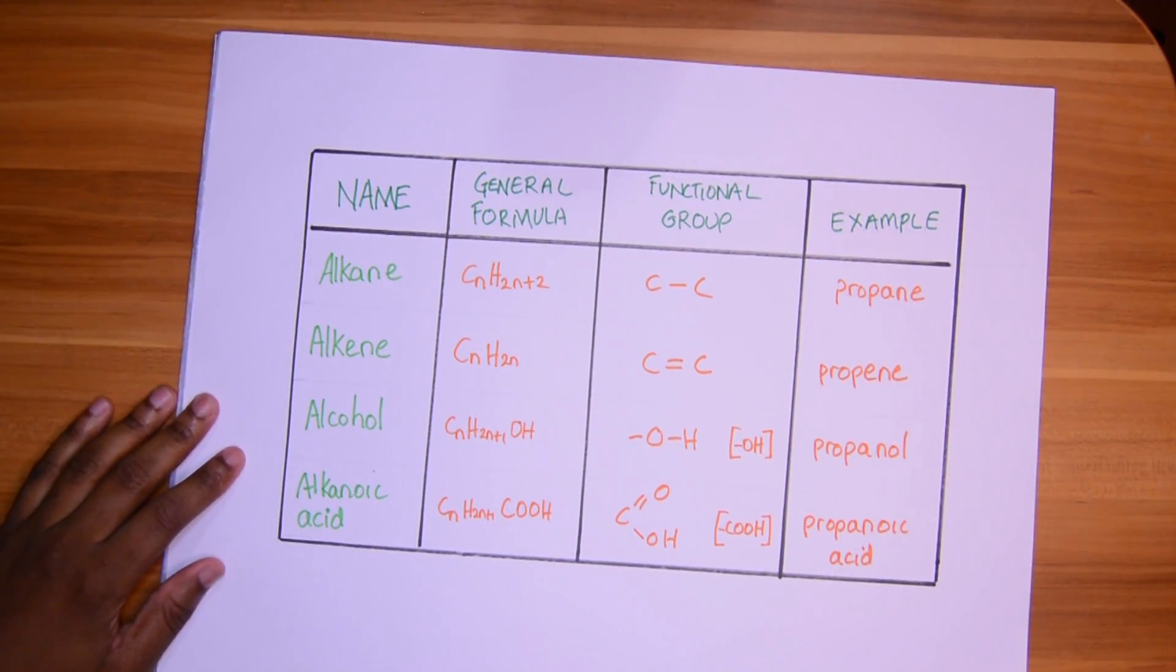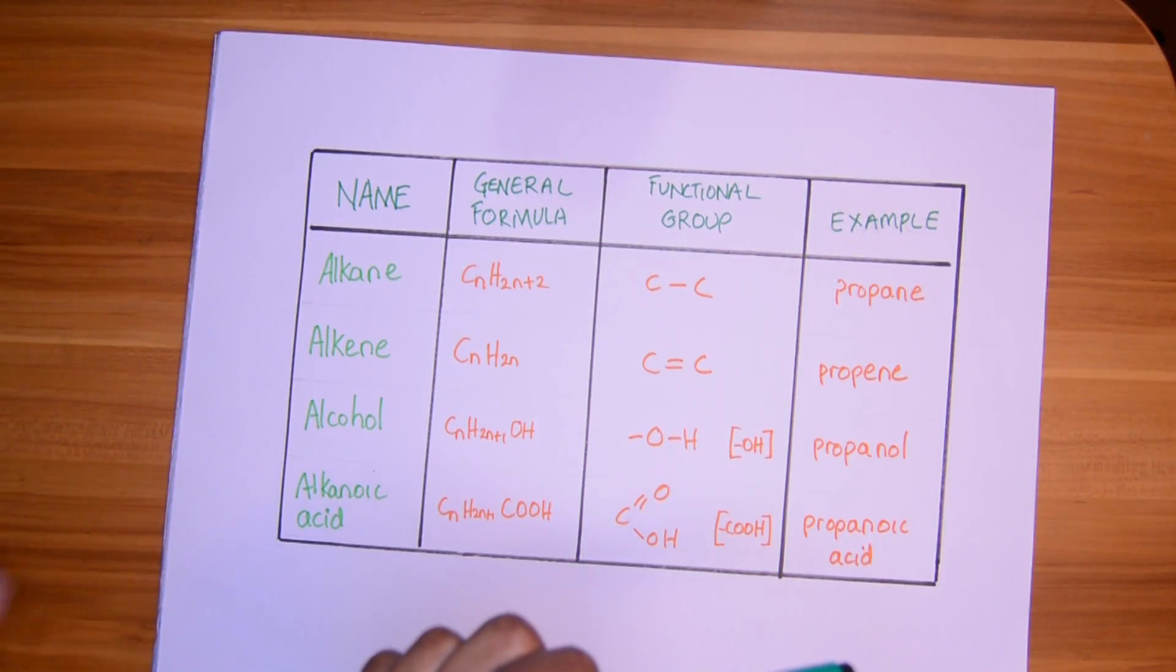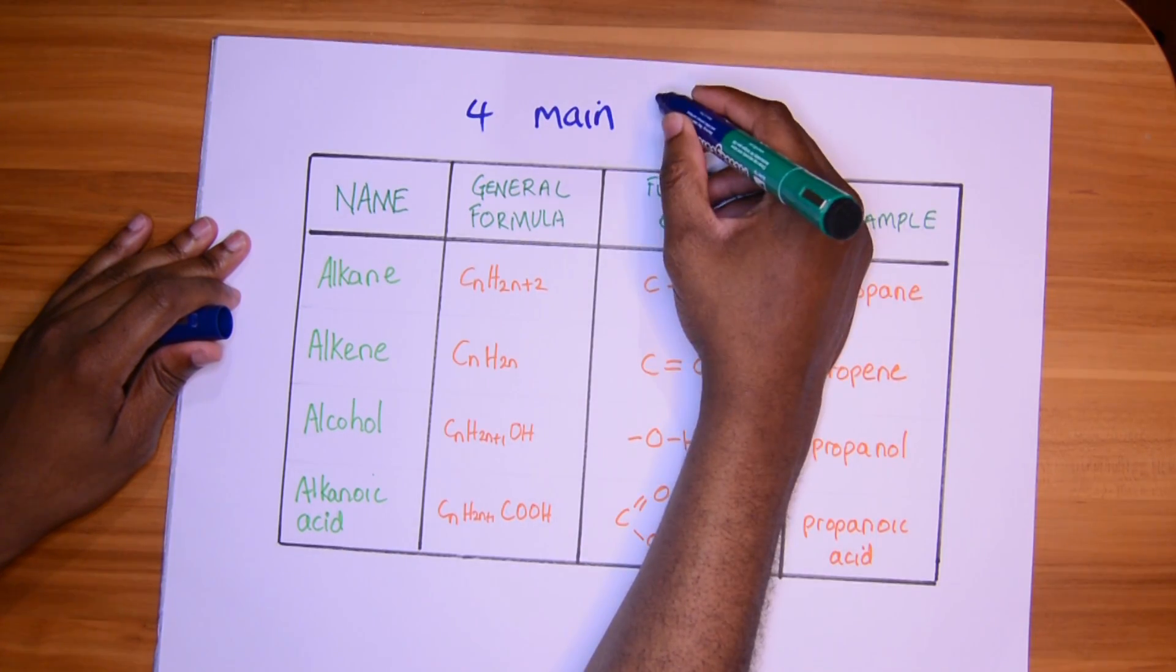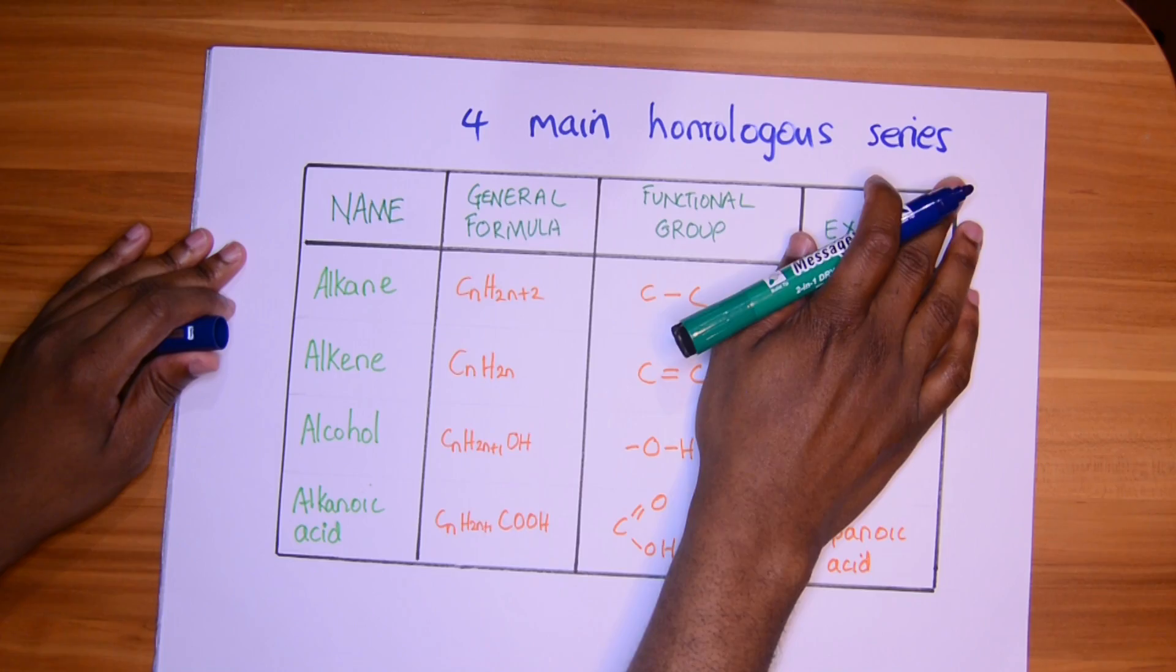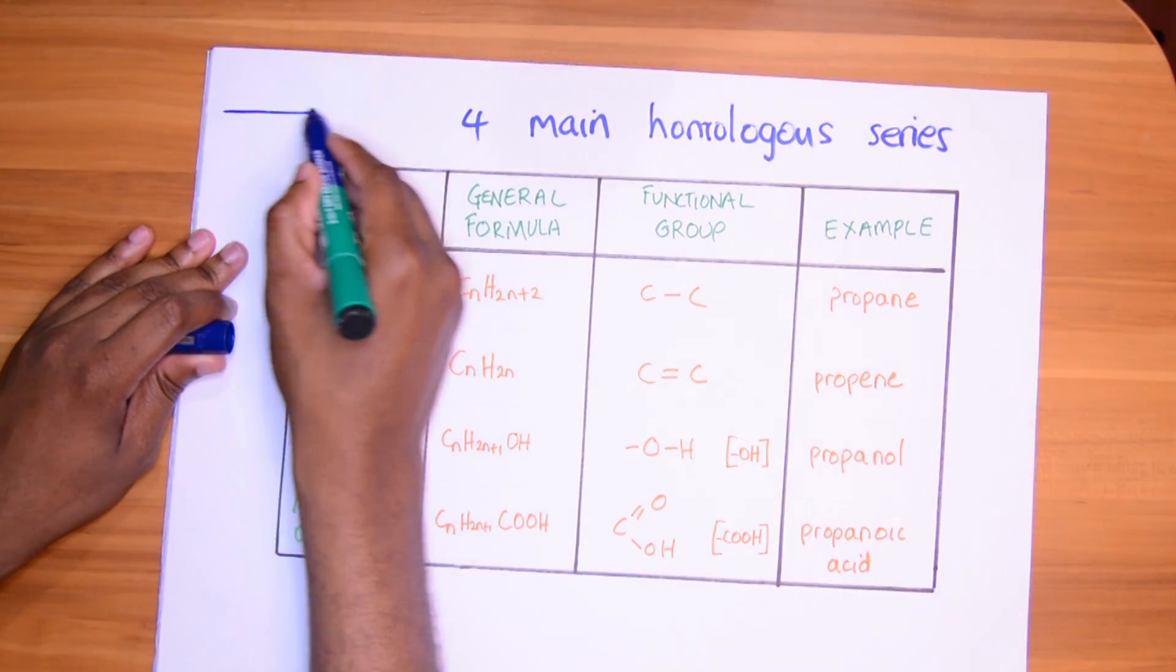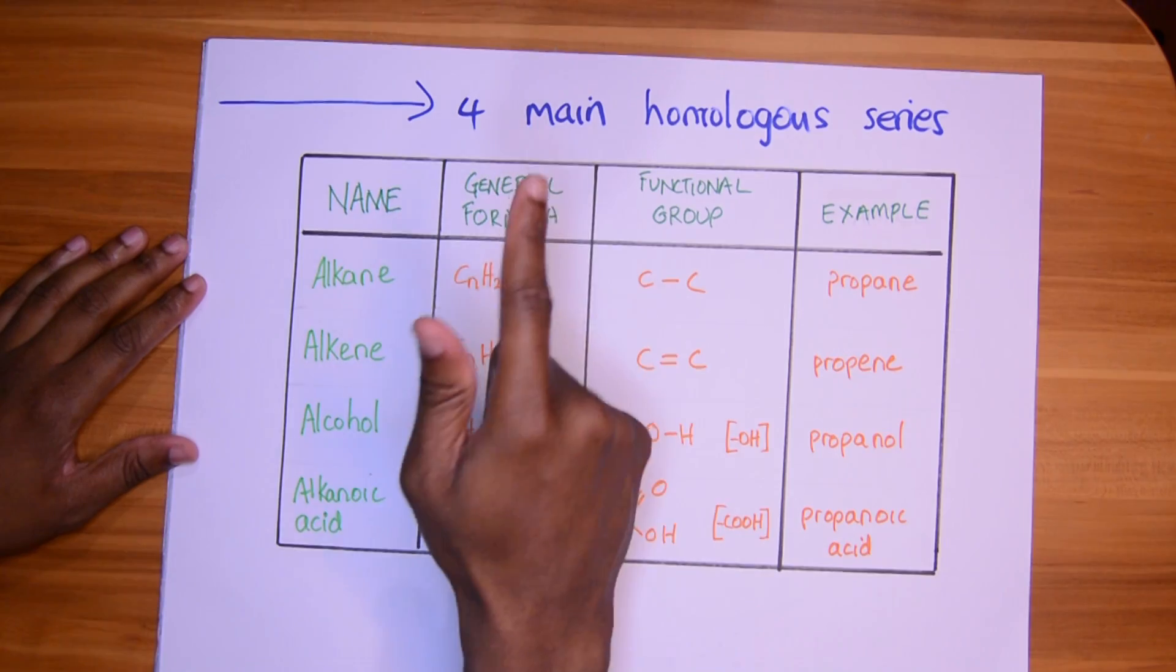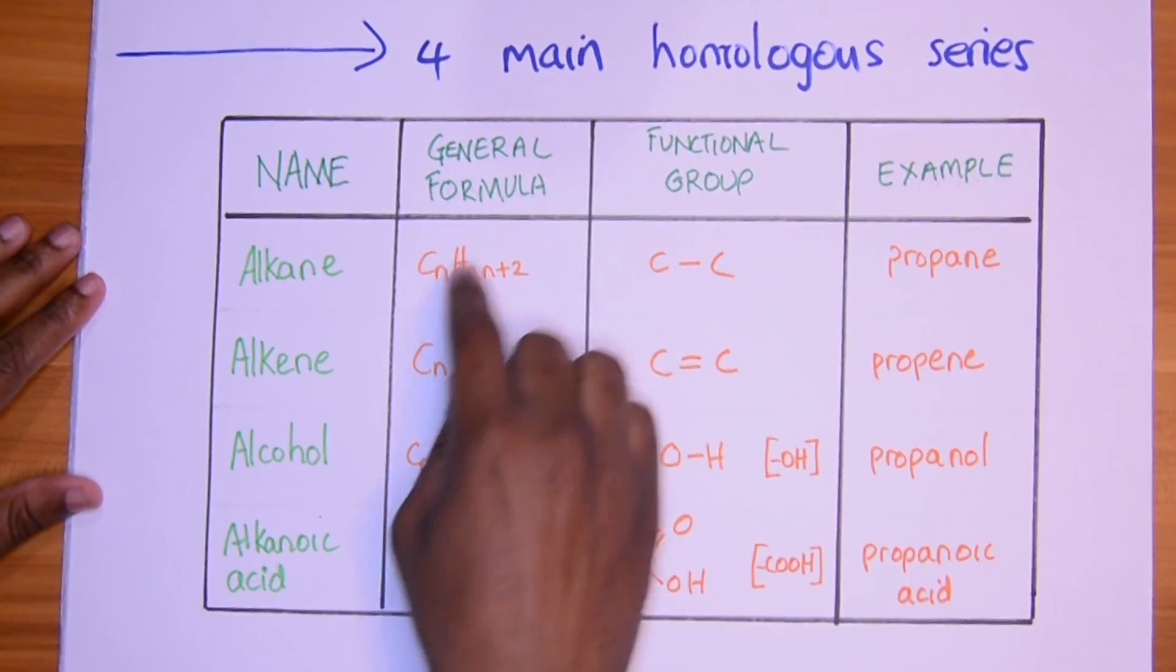These are the names of the four main homologous series you gotta get for CXC. Four main, four series. Yeah, four main. This is feeling kind of off balance, so let me put a little arrow here. Yeah, now it's feeling balanced. All right, so the four main homologous series: alkane, alkene, alcohol, alkanoic acid.